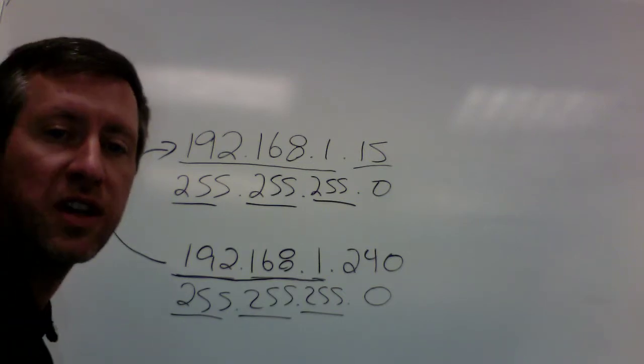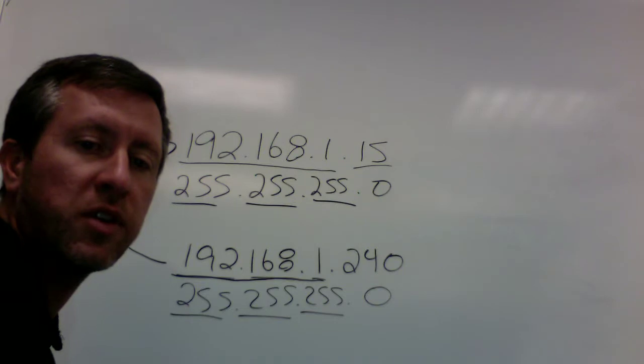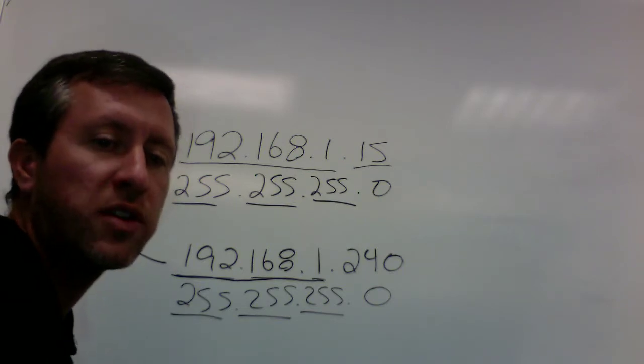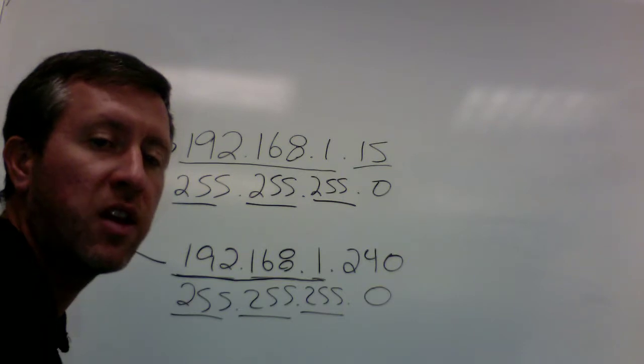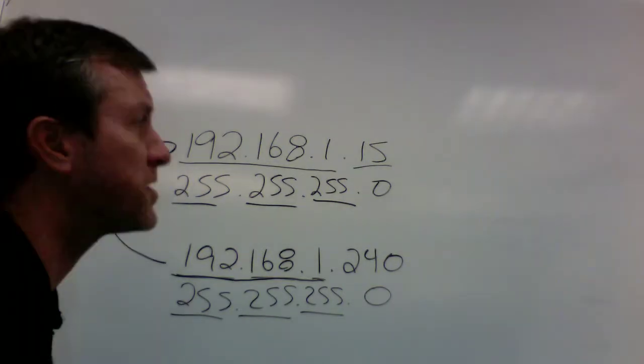So with this subnet mask, any computer that's on a network that has an IP address of 192.168.1.anything is going to be on that network. So if I also had 192.168.1.240 with subnet mask 255.255.255.0, I compare or mask off my network portion here. I compare 192.168.1 versus 192.168.1. I can say yes, those are on the same network. So that means that I can actually use a switch to make these two computers talk together, and I don't need some sort of a router.